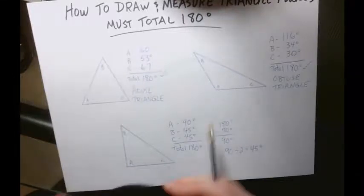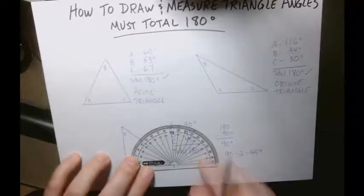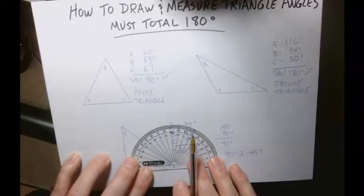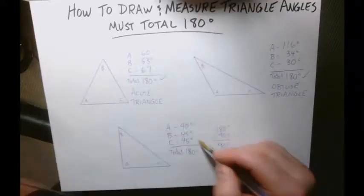But if you want to just check, let's just do C for fun. Line up the bottom line. Put it at the vertex. And you will see it goes exactly between 40 and 50. So 45 degrees.